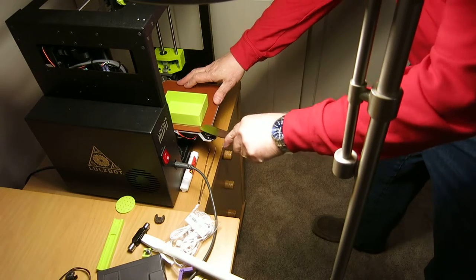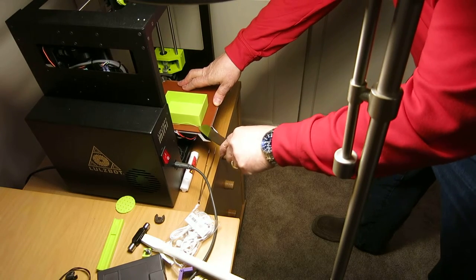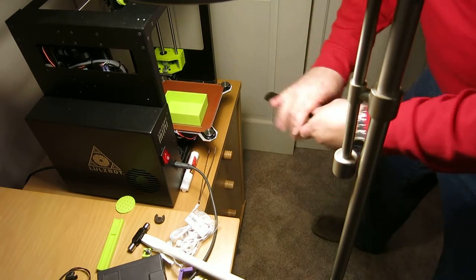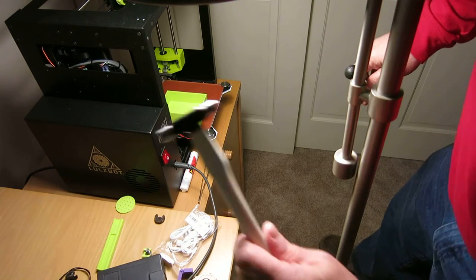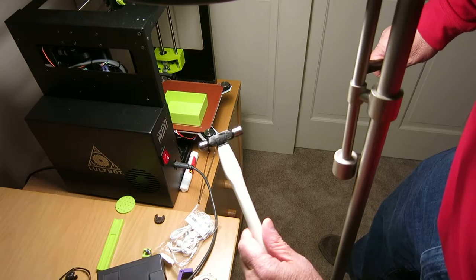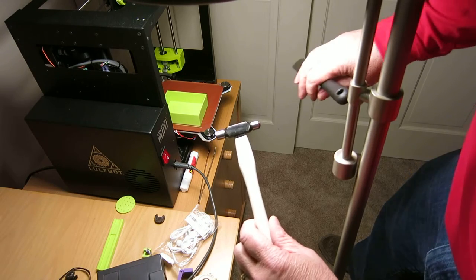You can see here I can try to get this off with a spatula. I can push all day and really risk gouging up the bed of the printer. So what I'm going to do is use this little 2-ounce hammer that I got and just give it a few taps.